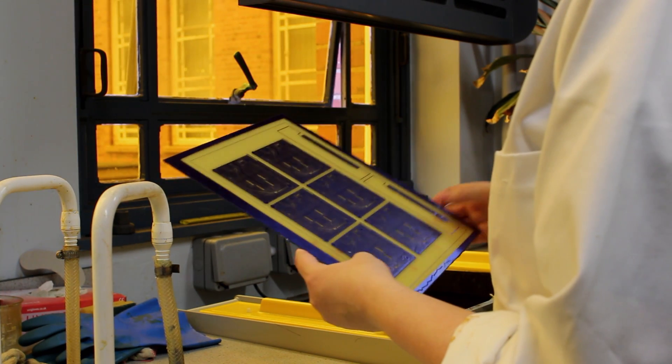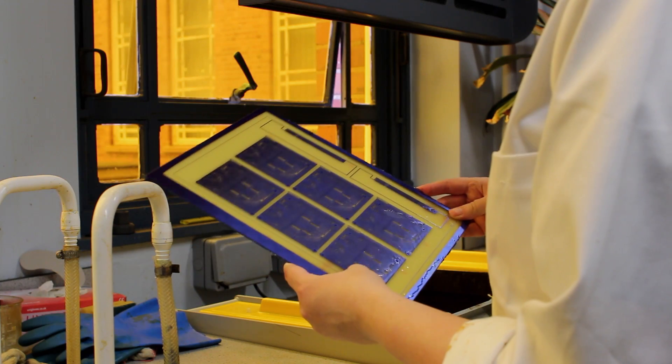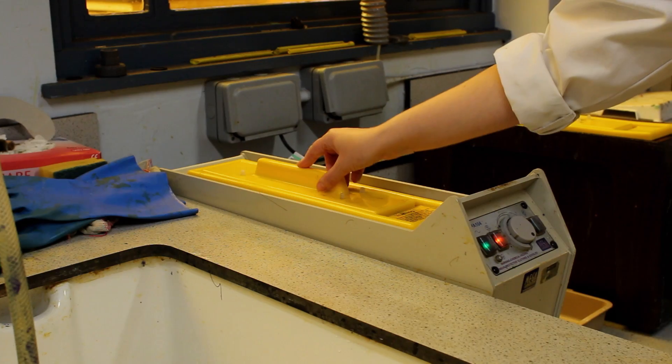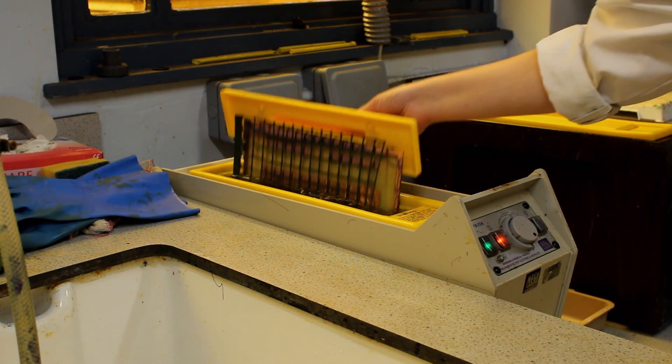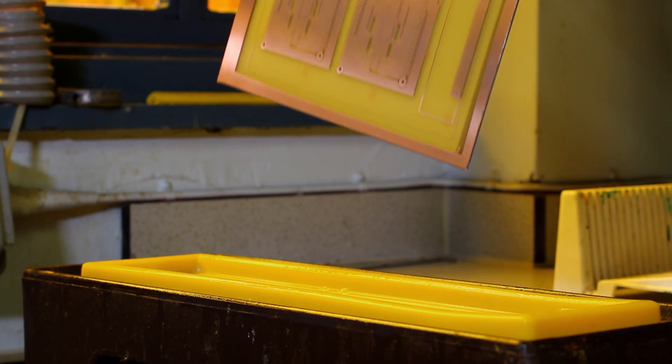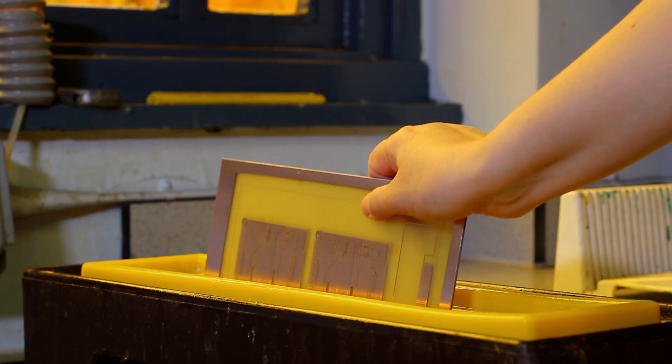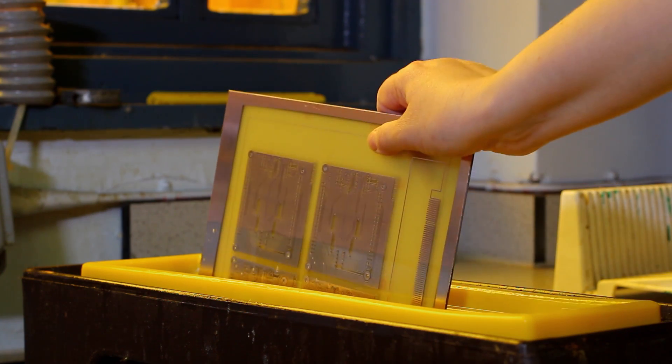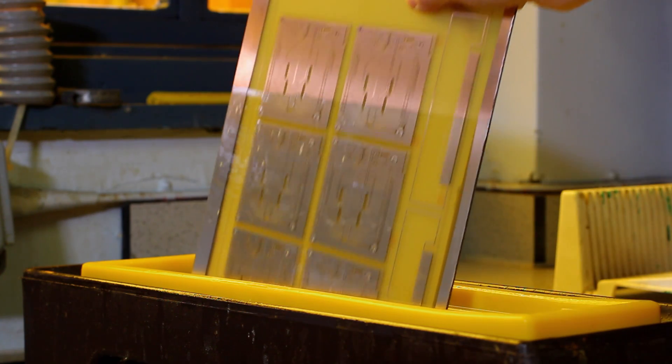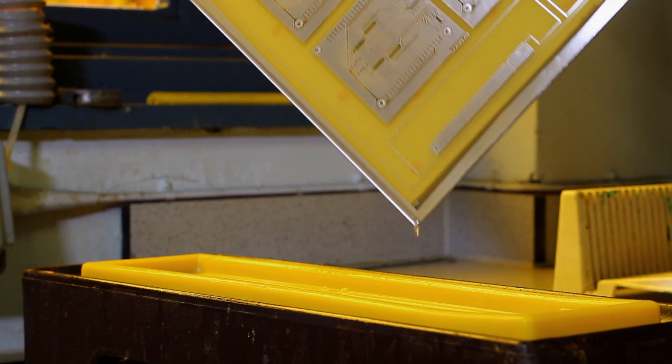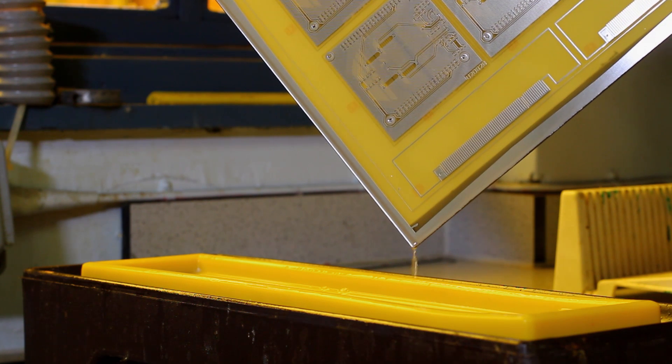The etched board is washed and visually inspected before being put in a bath of resist stripper to remove the hardened film. The board is then dipped in a tinning bath which coats the copper with tin preventing oxidization and making it easier to solder. The board is removed from the tinning bath and rinsed before being dried.